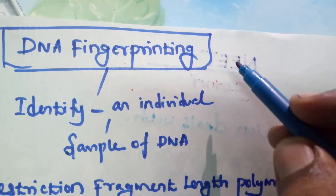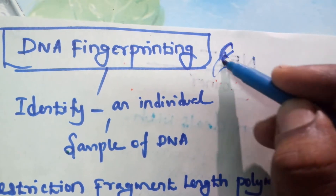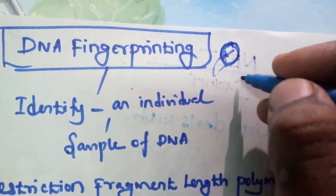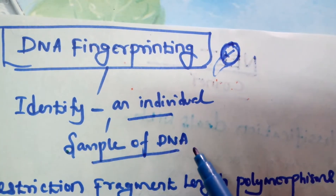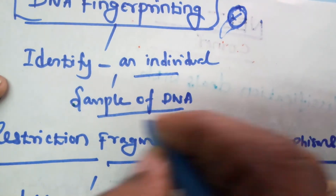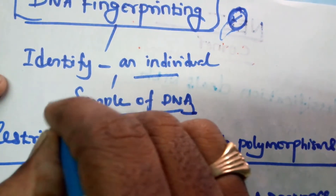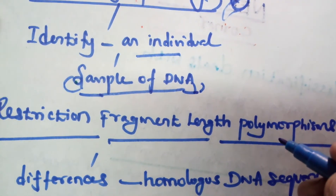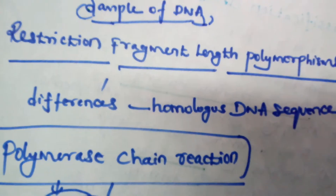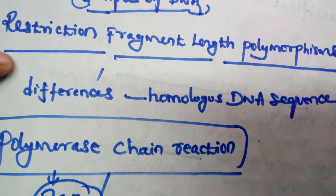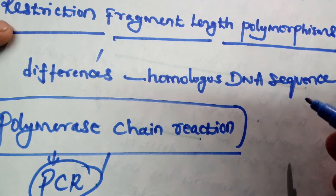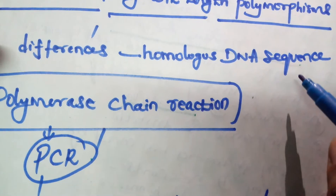Next, DNA fingerprinting. DNA fingerprinting is used in forensic science. It identifies an individual from a sample of DNA. DNA fingerprinting can be used to solve crimes. This is a one-mark and two-mark topic. DNA fingerprinting is based on Restriction Fragment Length Polymorphism — what is the difference in the DNA sequence?